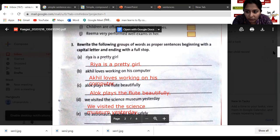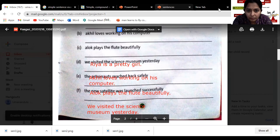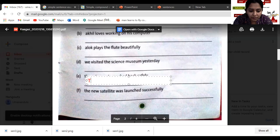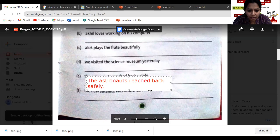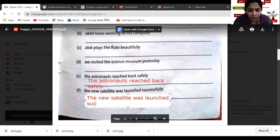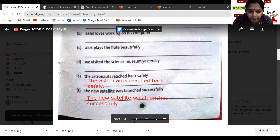'We visited the science museum yesterday.' Then we will go for the next sentences. 'The astronauts reached back safely' - so how to write this? The capital - 'The astronauts reached back safely' is the correct sentence. And the next one: 'The new satellite was launched successfully.'